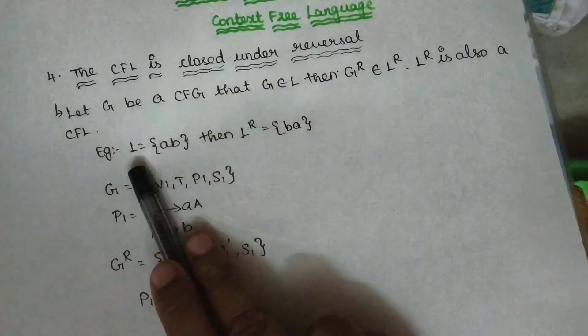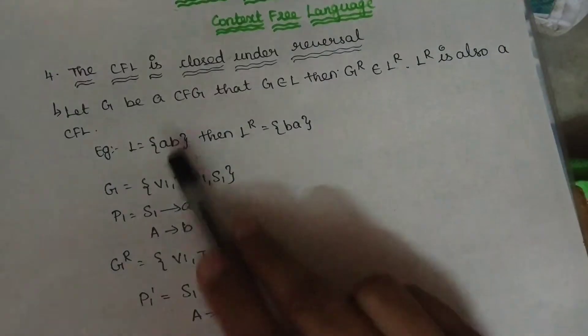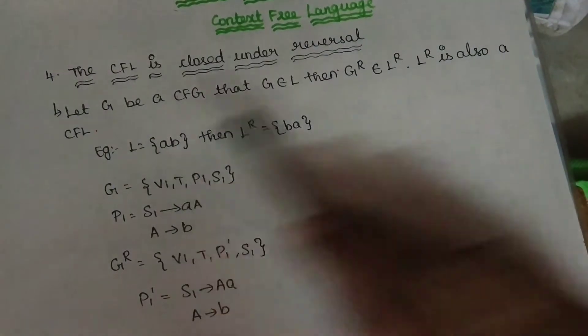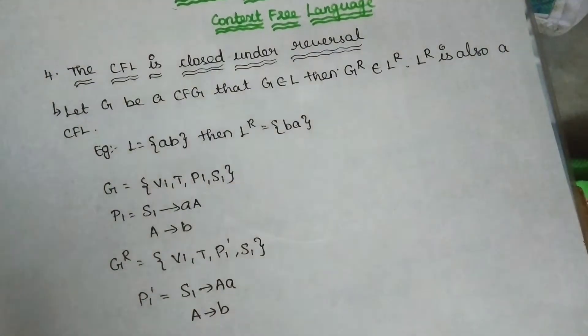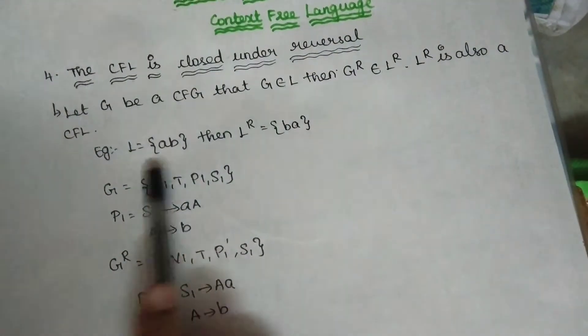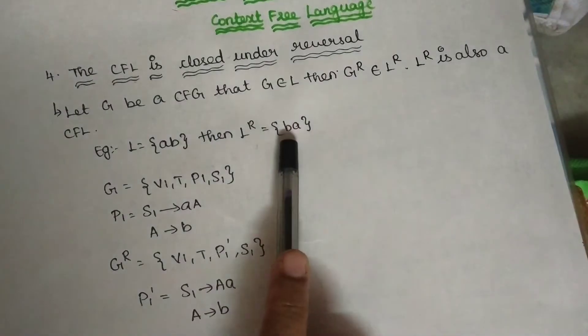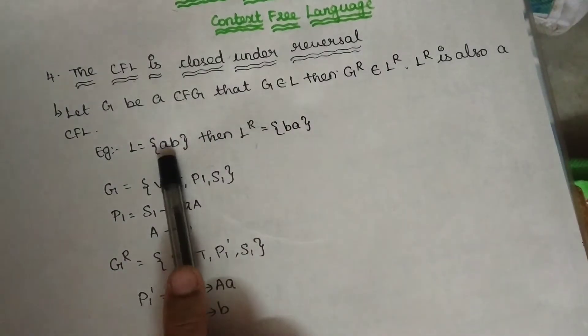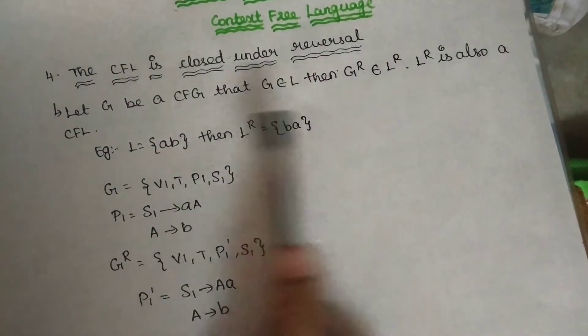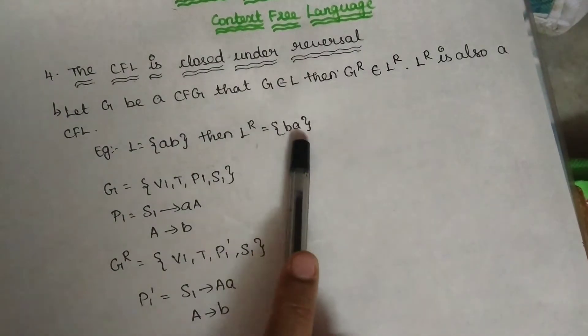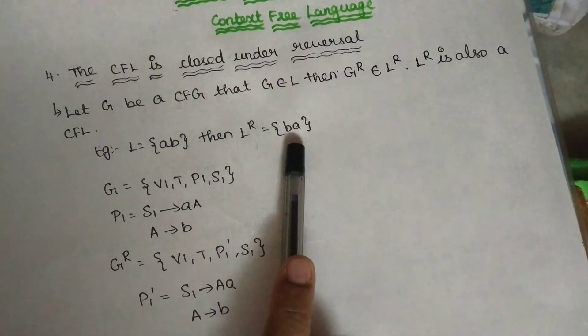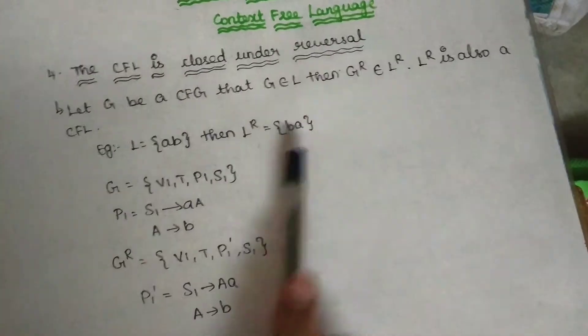For example, if you look at a language, there are strings. What you say about A, B — if you look at the reverse, there is B, A. This is a context-free language, and we are saying that the reversal is also a context-free language.